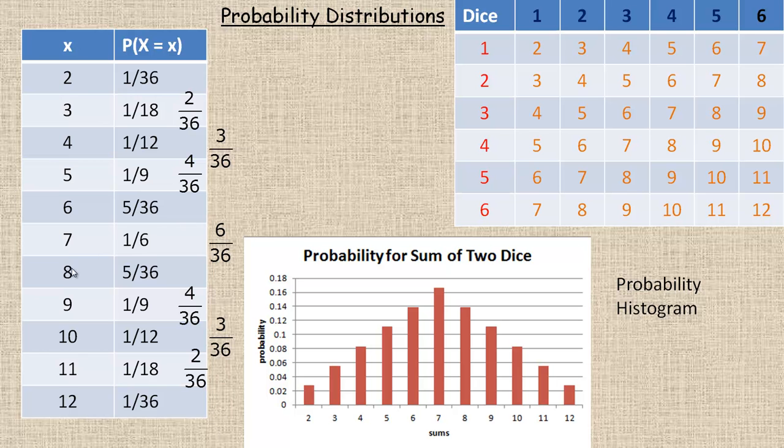So for example, the six and the eight both have five chances in 36. There's five ways of getting a six and there's five ways of getting an eight. The same with the nine and the five, there's four ways of getting each of those. So four chances in 36 reduces to 1/9, and then three, two, and one for the 10, 11, and 12.